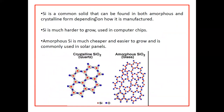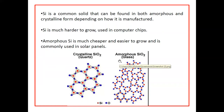Silicon is a common solid that can be found in both forms — amorphous as well as crystalline — depending on how it is manufactured. Crystalline silicon is much harder to grow and is usually used in computer chips, whereas amorphous silicon is much cheaper and easier to grow and is commonly used in solar panels. This diagram shows the structure of crystalline SiO₂ alongside amorphous SiO₂, illustrating that silicon can be used in either form.